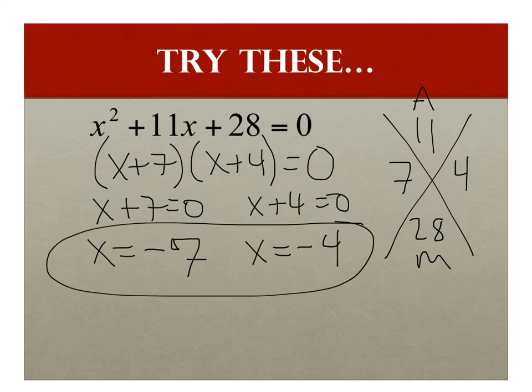Now, if it just asks you to factor it and not factor and solve, you would just leave it as x plus 7 times x plus 4. If it asks you to solve, you go that step further. So if it asks you to solve, you've got to go further. If it just asks you to factor, you can leave it like that.